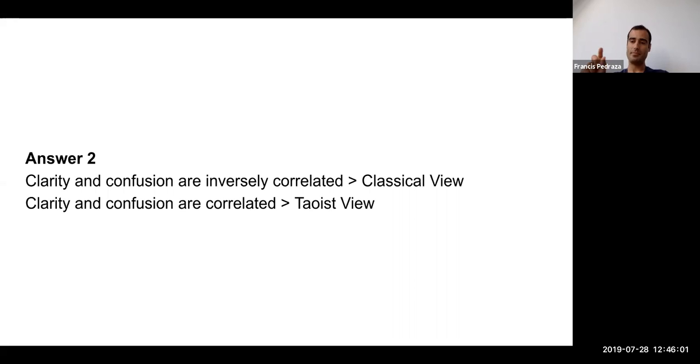But you see, there's a problem with that answer, which is that the master beginner also doesn't even know what they know. That master beginner is questioning everything they know to learn even more. And so this leads us to the second answer, which is two frameworks for the relationship between clarity and confusion.